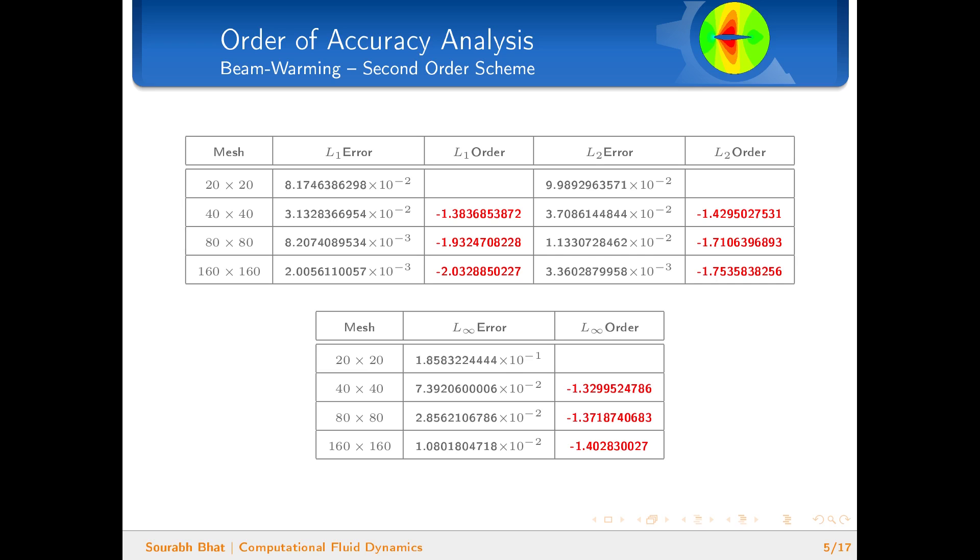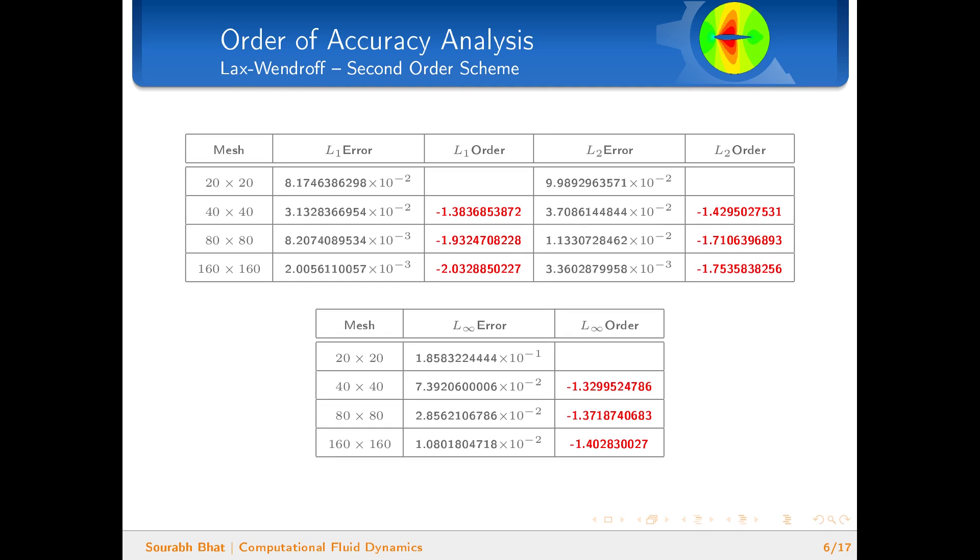The Lax-Wendroff scheme, which is also a second order scheme, produces very similar results. We get an order of two for L1, and the L2 and L∞ orders are tending towards two as well. The STWLS scheme, which is again a second order scheme, also produces very similar results.